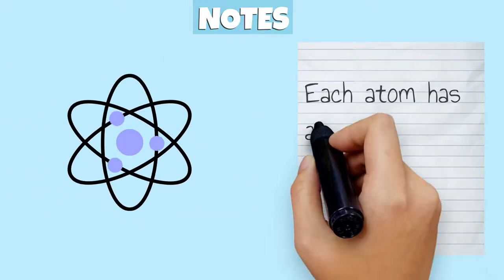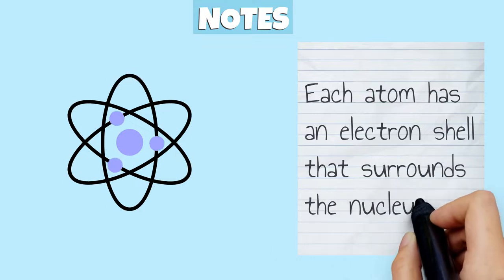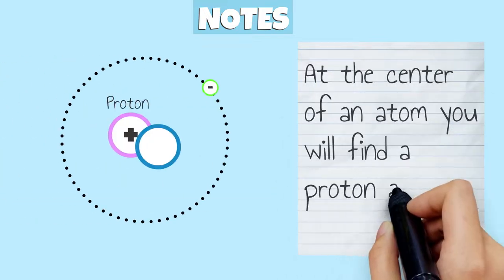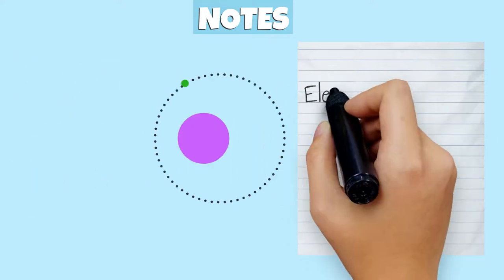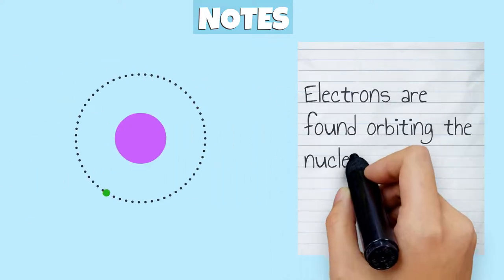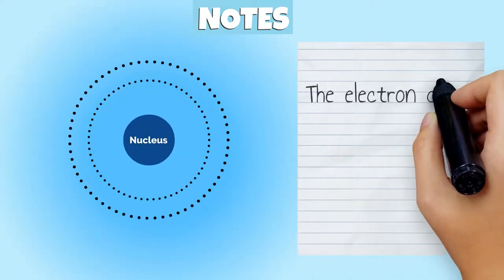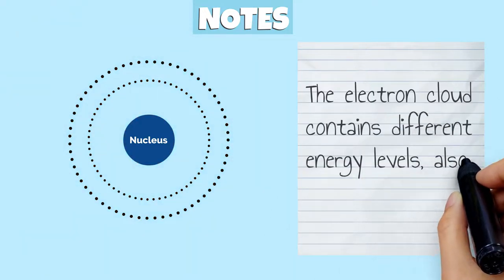Each atom has an electron shell that surrounds a nucleus. At the center of an atom, you will find a proton and a neutron. Electrons are found orbiting the nucleus of an atom. The electron cloud contains different energy levels, known as shells.